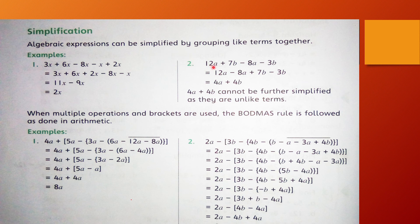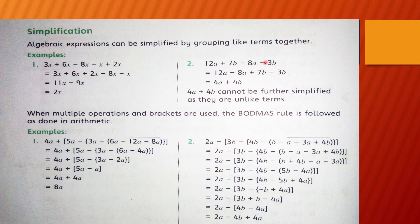Example number 2: do alag terms hain — 12a aur 7b, phir 8a aur 3b. 12a aur 8a dono like terms hain lekin signs alag hain: 12 ka sign plus, 8 ka sign minus. To 12a mein se 8a subtract karna hai. Isi tarah plus 7b aur minus 3b likhna hai.